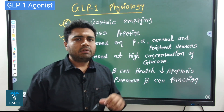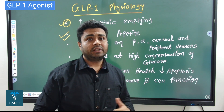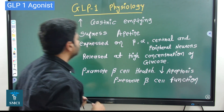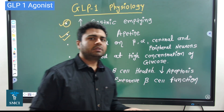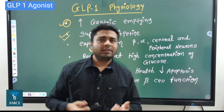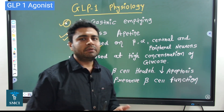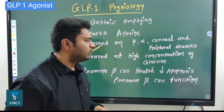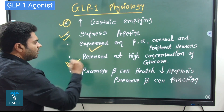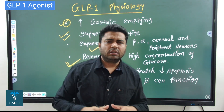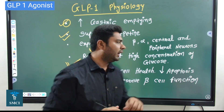GLP-1 analogs also suppress the appetite because they work on the central as well as the peripheral neuroreceptors. That is why they suppress the appetite — a very good thing, because if your appetite is less you will consume less, and automatically diabetes will be controlled. So these drugs are also approved for obesity. Remember, GLP-1 is only released when we have a high carbohydrate or high glucose diet.